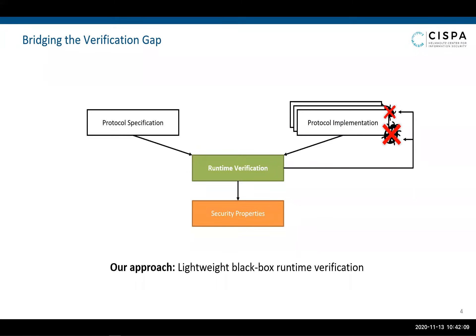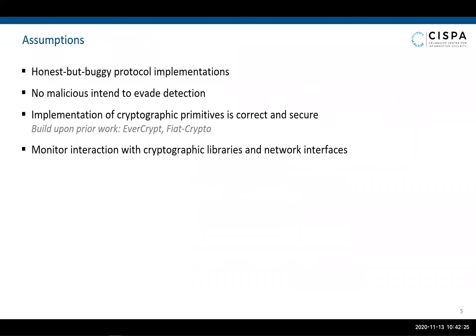In this work, we propose a lightweight black-box approach based on runtime verification, which is an alternative to theorem proving and model checking. We use the protocol specification to construct a monitor, which verifies during runtime of a protocol implementation that it follows its specification. Before we take a closer look at the architecture of our approach, we first clarify our assumptions. In this work, we focus on honest-but-buggy protocol implementations and do not consider malicious implementations that have been intentionally subverted to evade detection of the monitor, for example, by covert and side channels.